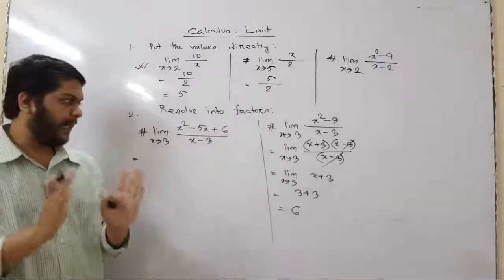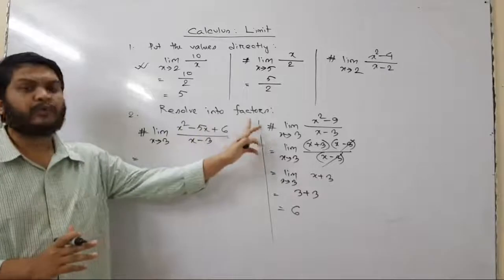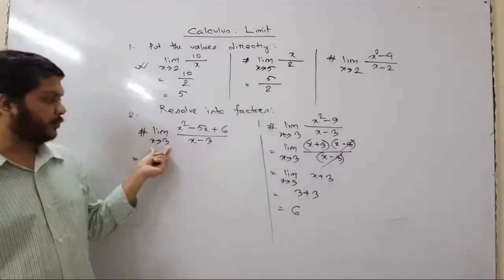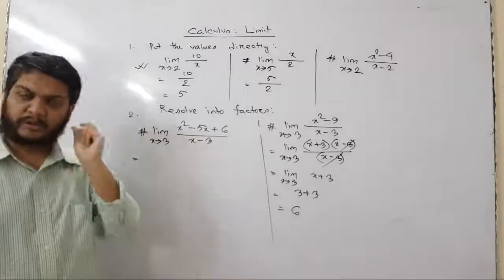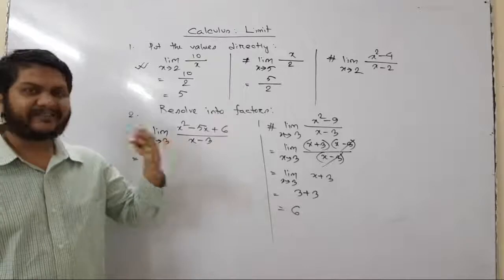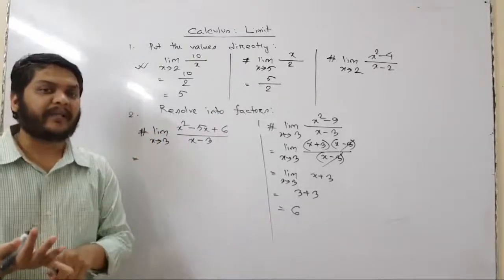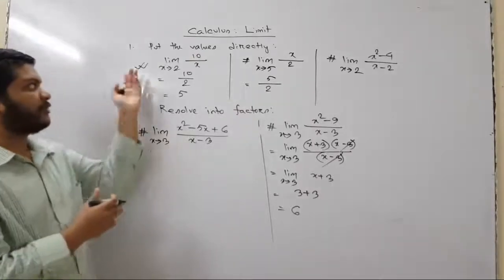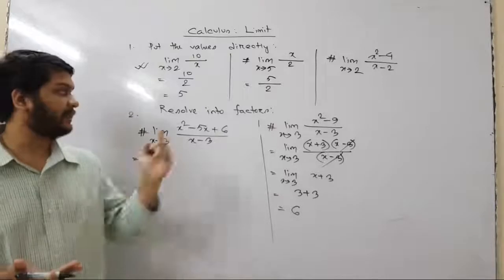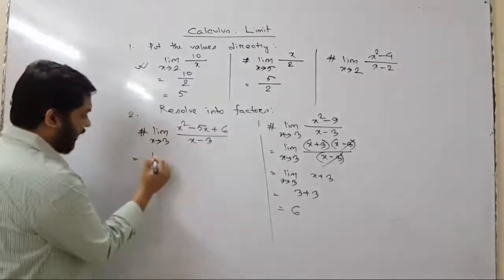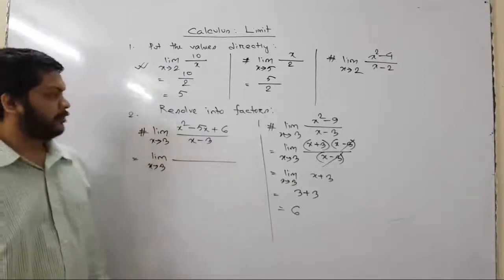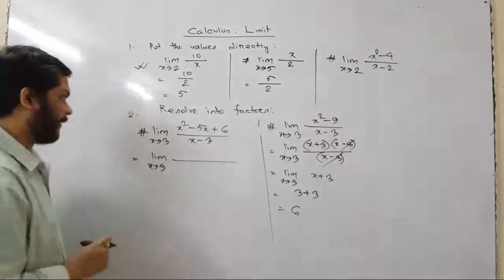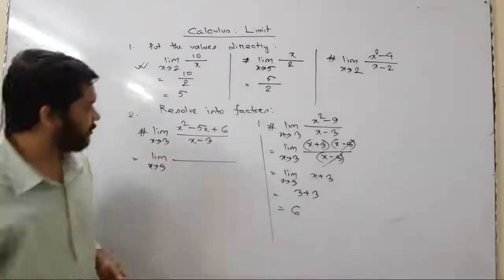This is a bit different but the concept is the same. If we put x equals 3 in the denominator we get 3 - 3 which is 0, so we end up in an indeterminate or undefined form. We cannot put the value immediately. The next technique we know is resolving into factors. Pause the video, try to solve it yourself, and then continue watching.